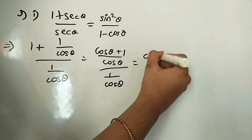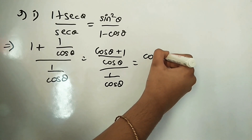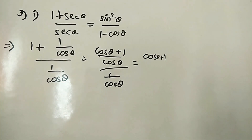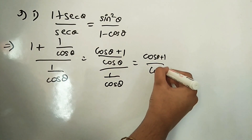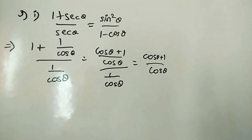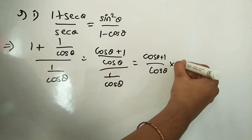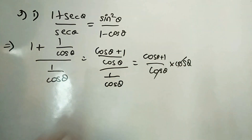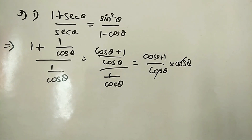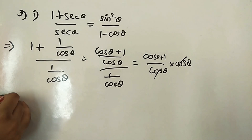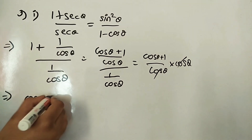Dividing by 1/cos θ is the same as multiplying by cos θ, so cos cancels and we are left with cos θ + 1. We are trying to reach sin²θ/(1 − cos θ), so we multiply by (cos θ − 1)/(cos θ − 1), which equals 1.